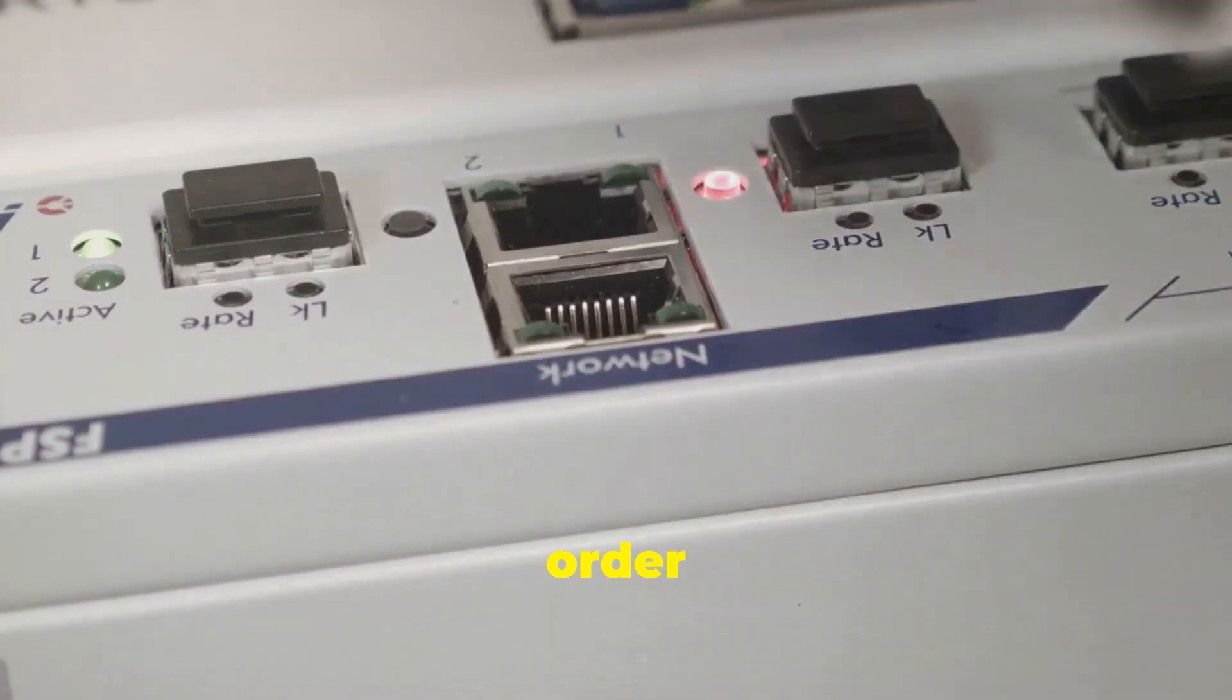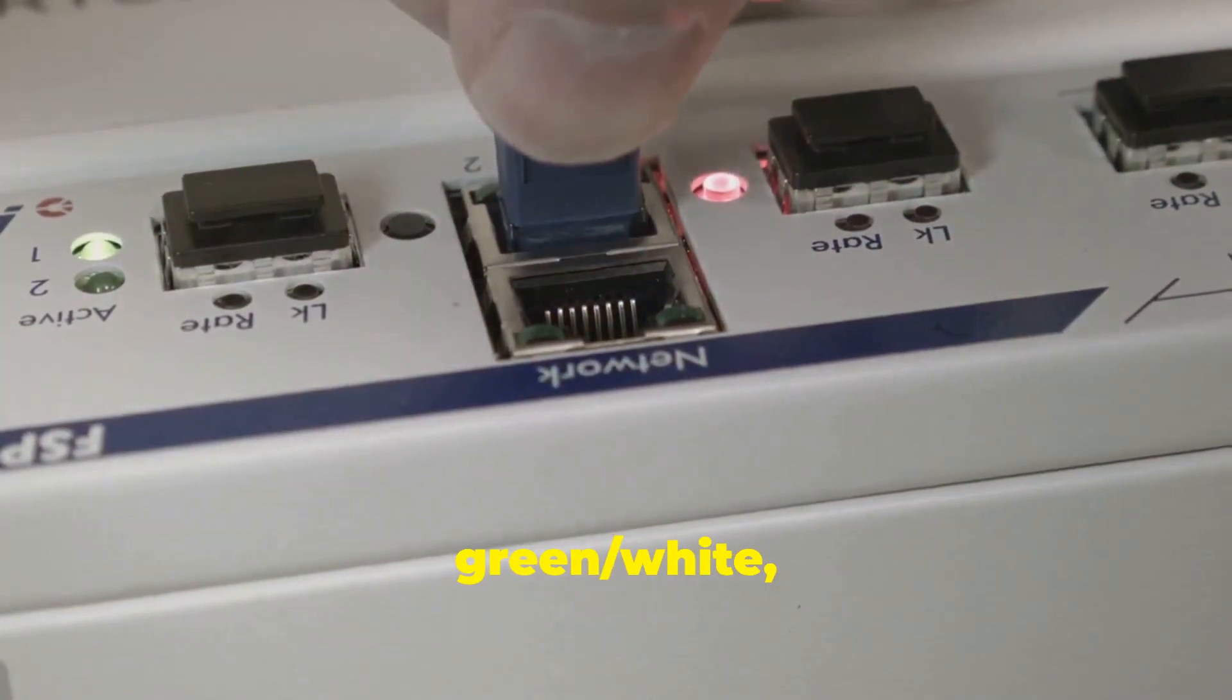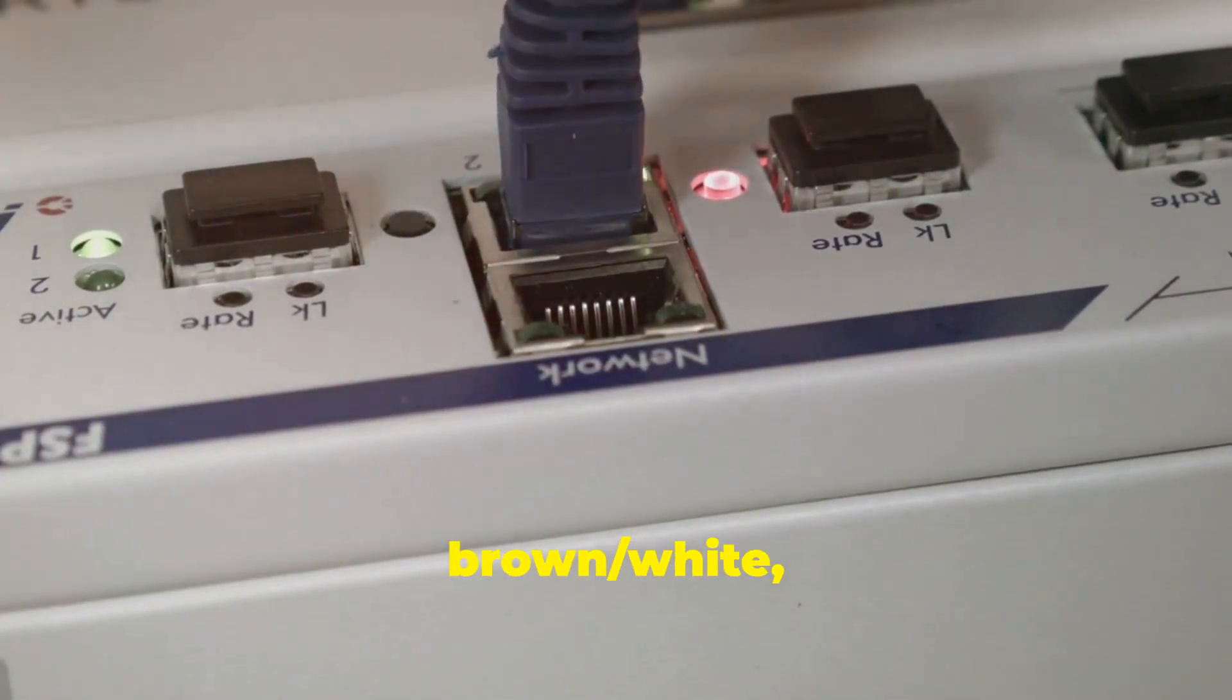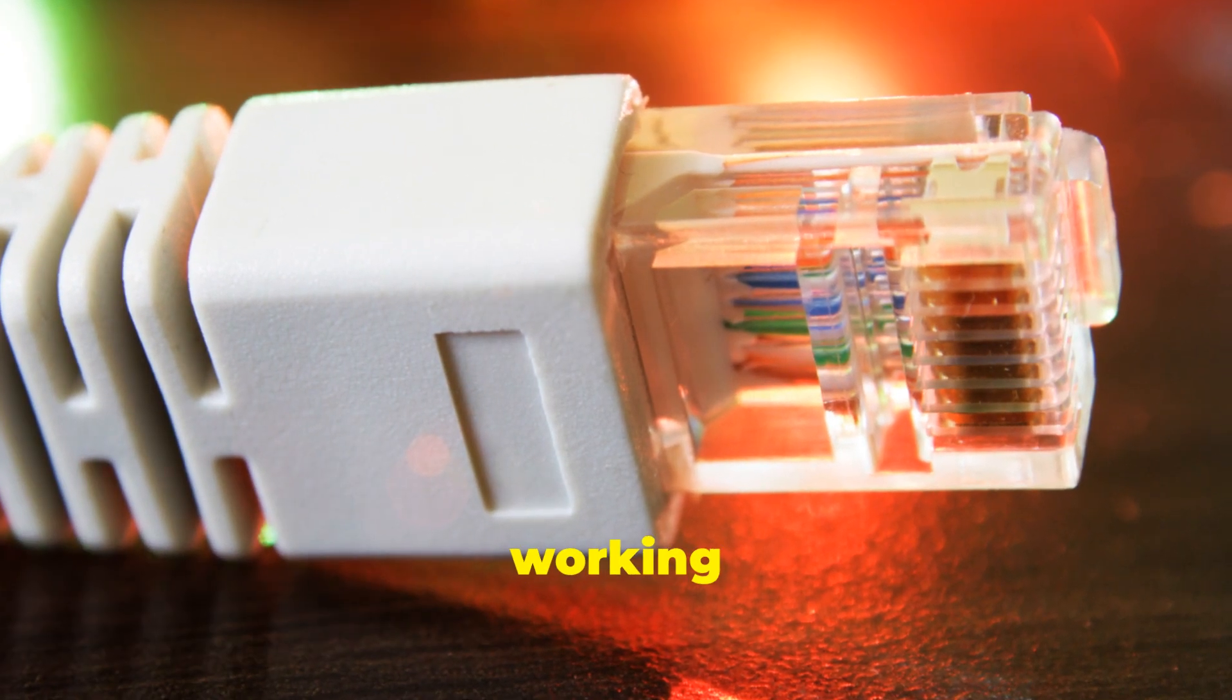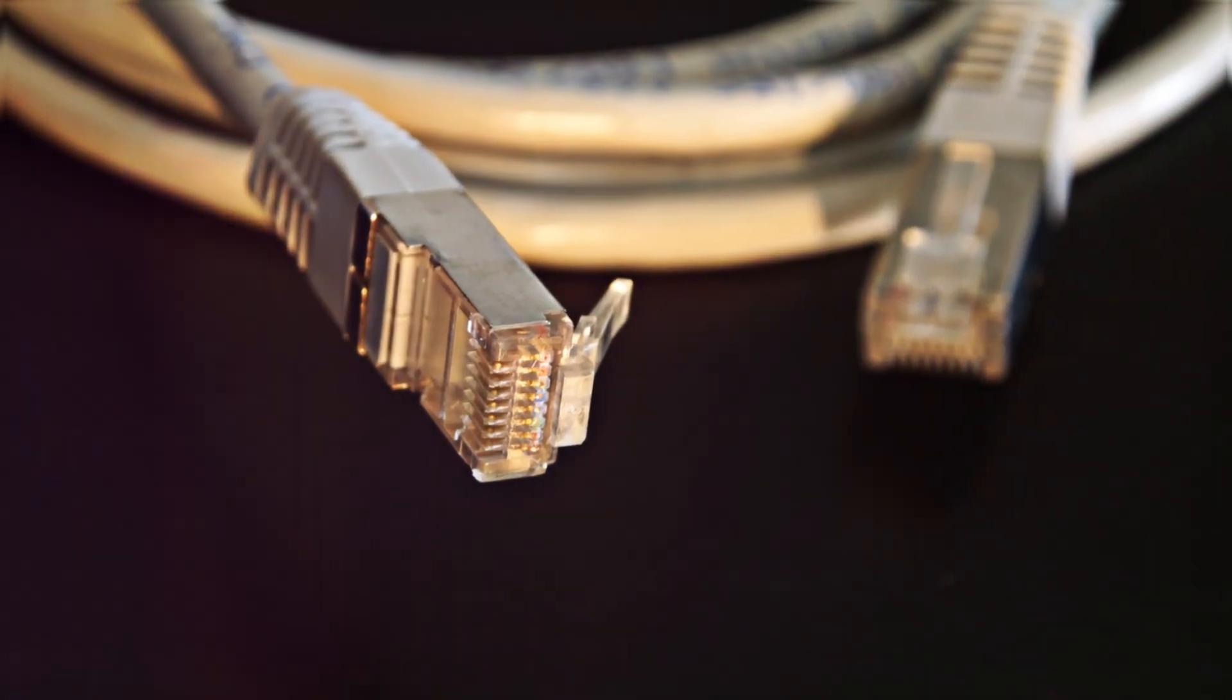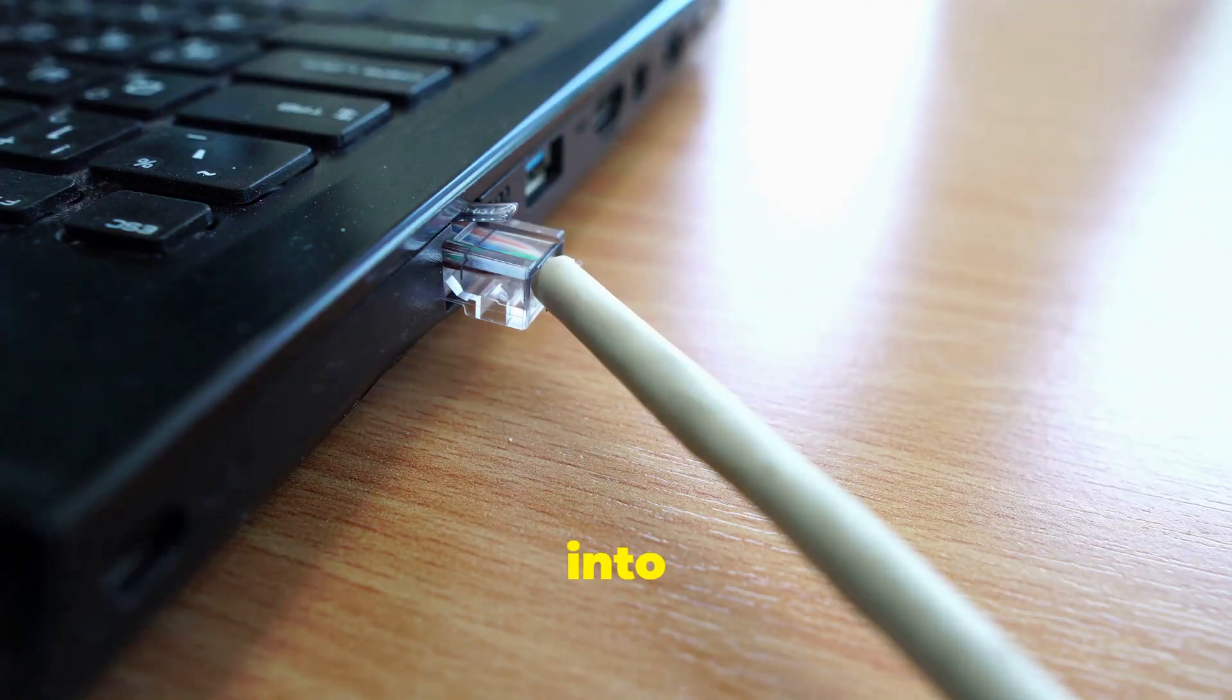The wire order for T568B is: orange-white, orange, green-white, blue, blue-white, green, brown-white, brown. Double-check the order—getting it right is crucial for a working connection. Now, carefully hold the RJ45 connector with the clip facing down and the gold contacts facing you.